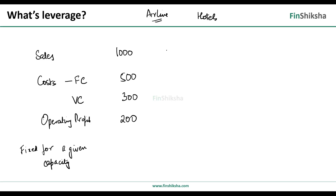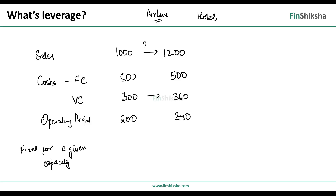Now how does this play out? Let's say sales go up by 20 percent — to 1,200. Fixed costs remain fixed. Variable cost is 30 percent of sales, so as sales move up by 20 percent, variable cost also goes up by 20 percent — from 300 to 360. So total costs become 860, and operating profit becomes 340. A 20 percent increase in sales basically gave you a 70 percent increase in operating profit.